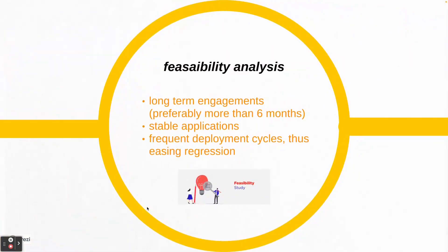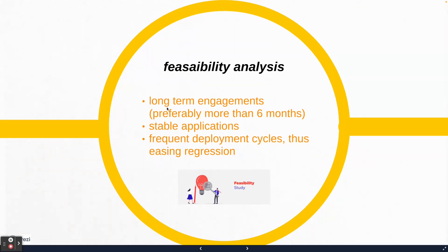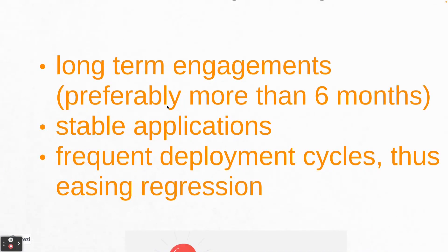The next section talks about feasibility analysis. Not every project necessarily makes sense to automate — talking from the ROI perspective, does it make sense to deploy your resources to automate those test cases? The first parameter is long-term engagements: if a project is going to last preferably more than six months, or practically more than three months, it makes sense to automate, because you are going to rerun those test suites after every sprint to ensure no new bugs are introduced due to new development.